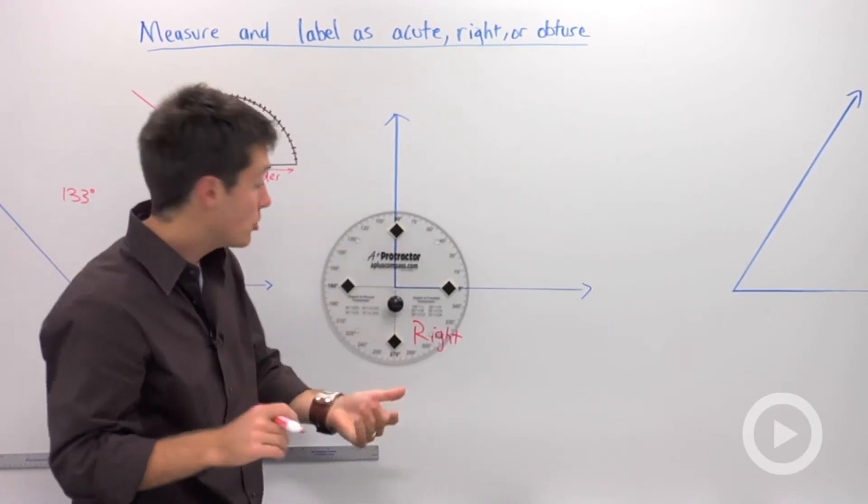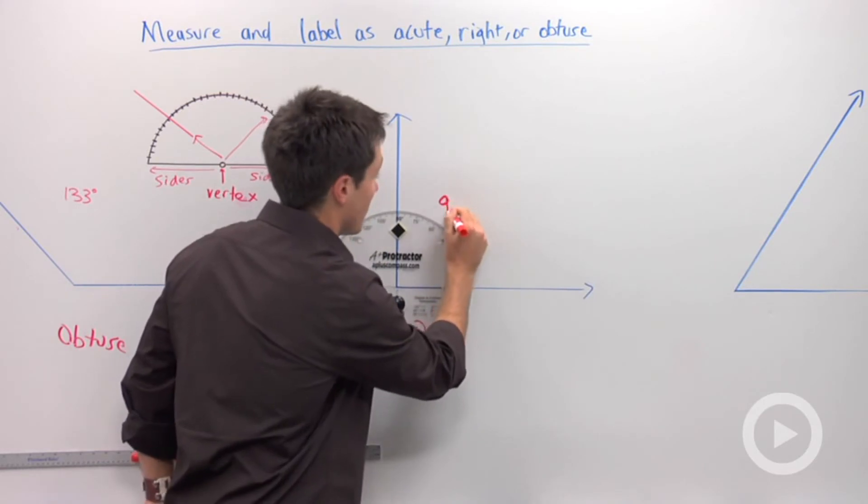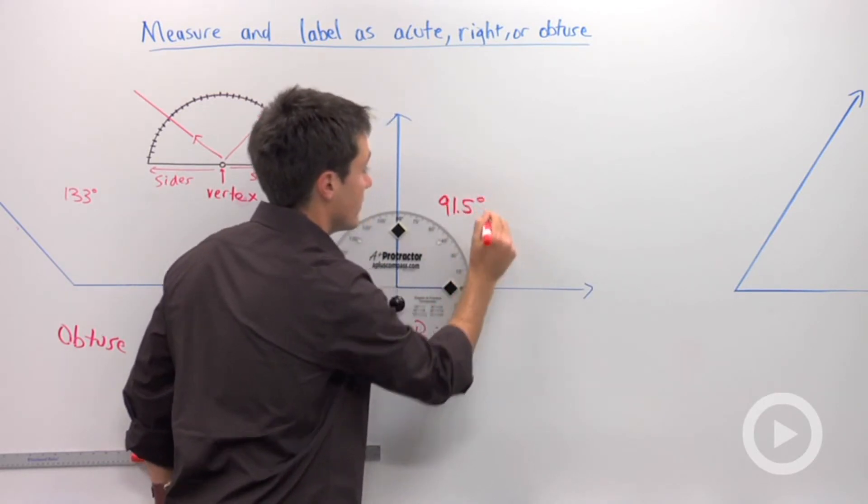And it looks like we have something that's a little bit over 90 degrees, which means that's going to be obtuse. And when I measure it, I see that we're going to have about 91.5 degrees.